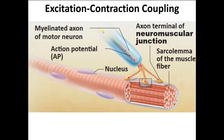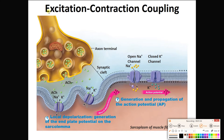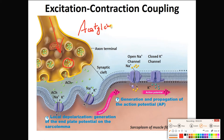What we've got to figure out is how an action potential going down this neuron prompts the release of neurotransmitters, and then how those neurotransmitters get this muscle cell to contract. So we are zooming in on the neuromuscular junction here. An action potential will make its way down here, and when it does, these vesicles are going to undergo exocytosis and release neurotransmitters. The neurotransmitters being released are acetylcholine — ACh — the neurotransmitter released by our somatic motor neuron onto our skeletal muscle cell.